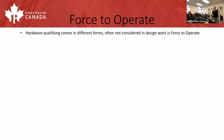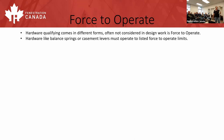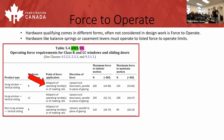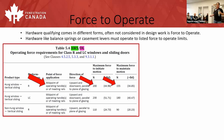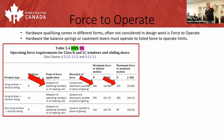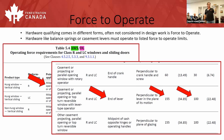Hardware qualifying comes in different forms. One often not considered in design work is force to operate. Hardware like balance springs or casement levers must operate within listed forces to their operational limits. There are tables for different product classes and types showing force to initiate motion as well as force to keep it moving. For example, a really tight slider that boom-locks into the interlock with heavy weatherstrip — there's a requirement for the force needed to break it free and keep it moving.